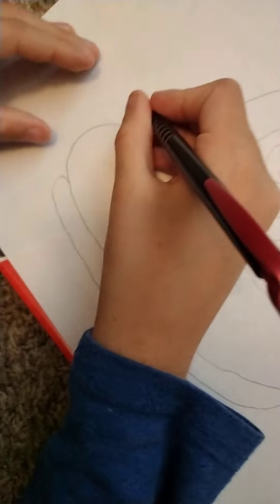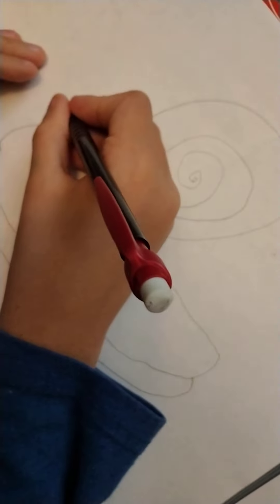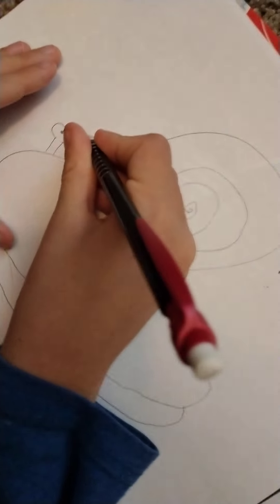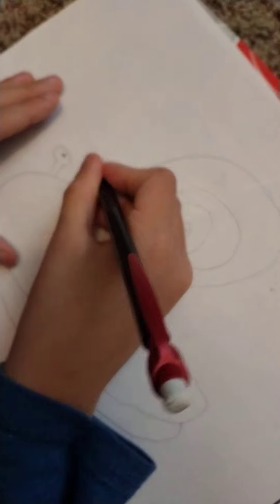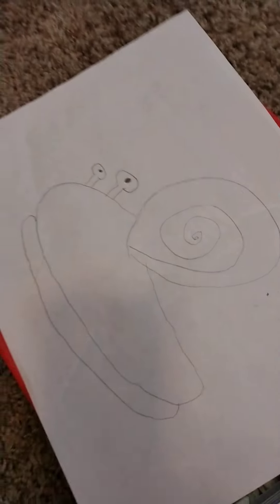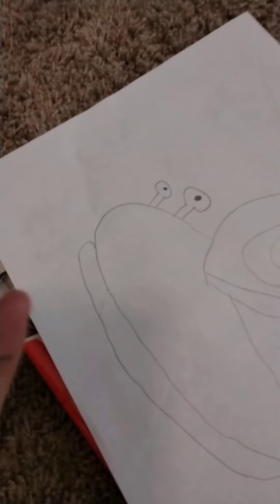You can make them as big as you want. So, there's one. And then there's the other. Every snail is unique. They have a different shell, different size body, and they're all cute creatures.